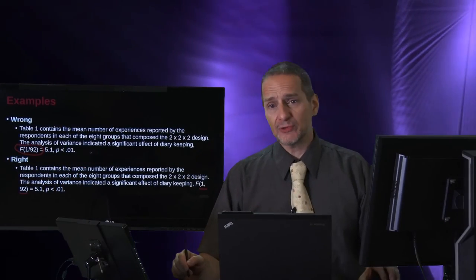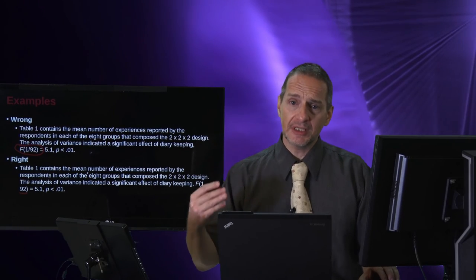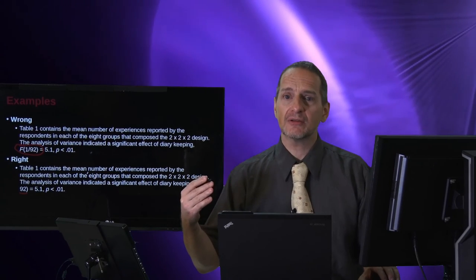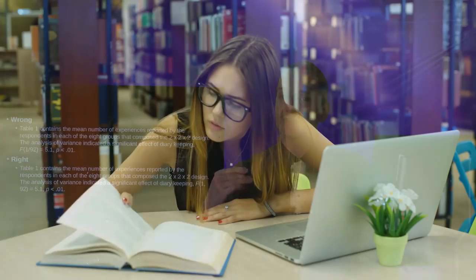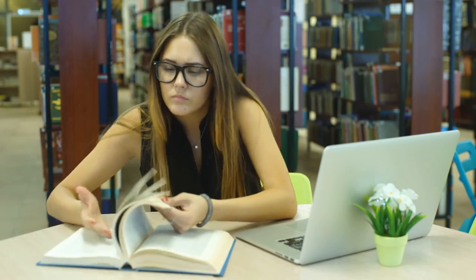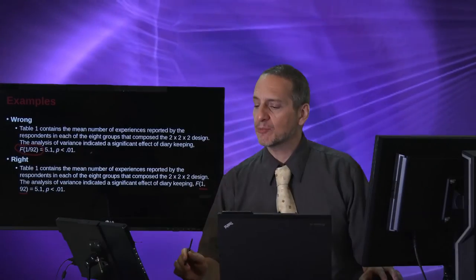The best way to make sure you're writing your F test or T test or your regression parameters correctly is to check the journal you're targeting or to check with your professor on the normal way that it's accepted to write it. Or just check published papers that are in your area. I mean you must have read a lot of papers to write your thesis, so keep with that.